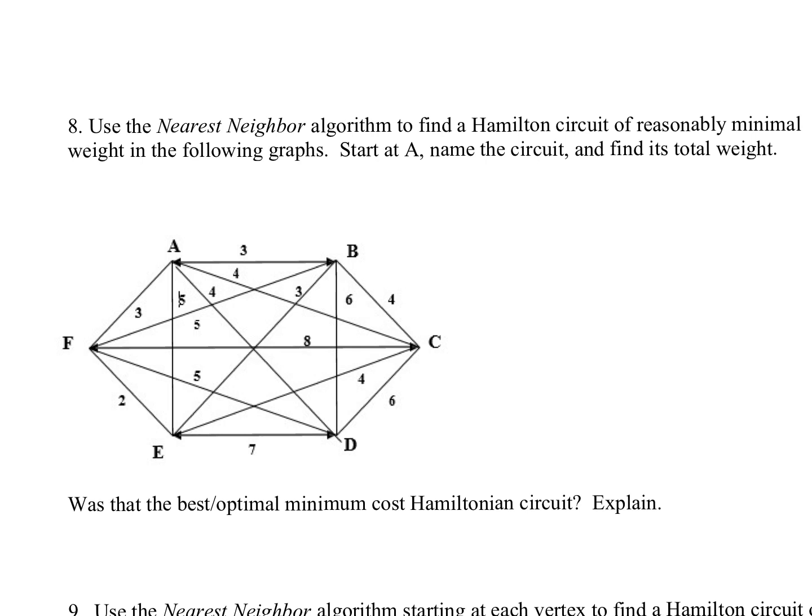So this is number eight from your workbook, section 2.2, on page 24. We're using the Nearest Neighbor algorithm to find a Hamiltonian circuit of reasonably minimal weight in the following graphs. Remember these are called greedy algorithms. We're trying to minimize our cost with these weighted graphs.